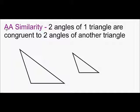This happens when two angles of one triangle are congruent to two angles of another triangle. So, for instance, if these two angles were congruent, and then these two angles are congruent, then my two triangles are similar by AA similarity.